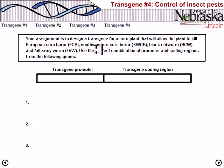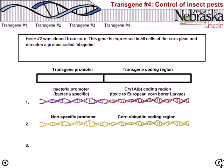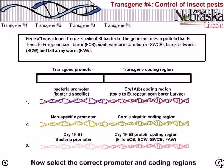Gene one was cloned from Bacillus thuringiensis bacteria and encodes the protein used to kill the European corn borer larva. Gene two was cloned from corn and is expressed in all cells of the corn plant, encoding a protein called ubiquitin. Gene three was cloned from a strain of BT bacteria and encodes the protein toxic to European corn borer, southwestern corn borer, black cutworm, and fall armyworm.